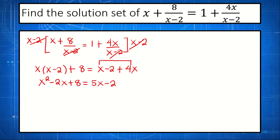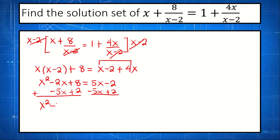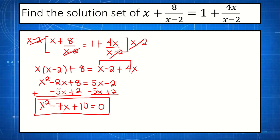This is not yet in standard form. To make it standard, we add negative 5x plus 2 to both sides. We simplify: bringing down x squared, negative 2x minus 5x gives negative 7x, plus 8 plus 2 is 10, equals 0. This is now our equation in standard form: x squared minus 7x plus 10 equals 0.